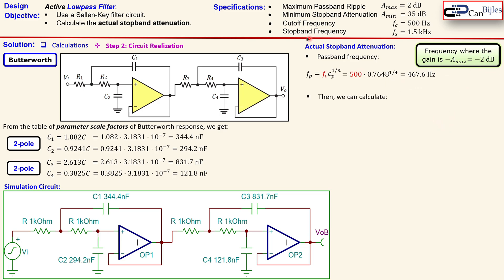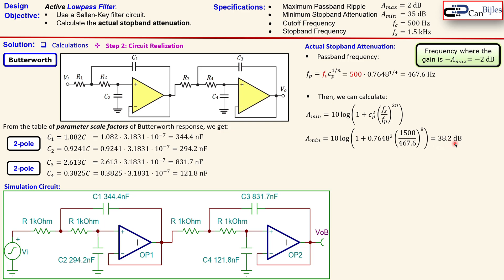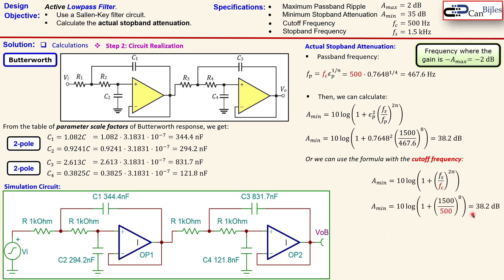Using the Butterworth A_min formula with epsilon_p, the passband frequency, the stopband frequency, and the filter order n = 4 — noting that the exponent is 2n = 8 — we substitute all values and get A_min = 38.2 dB, which is indeed larger than the required 35 dB. Alternatively, a faster formula using the cutoff frequency directly also gives 38.2 dB, confirming the result.